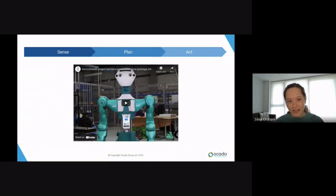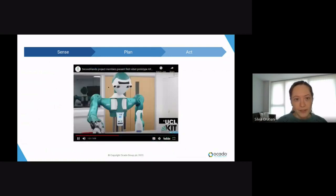Now for this task the sense plan act means sense: find the bottle. Plan: figure out how to move towards the bottle, that is how to move the arm and hands motors at what time and when to close the hand. And act: execute the planned motion. Now in this case, let's play the video again.